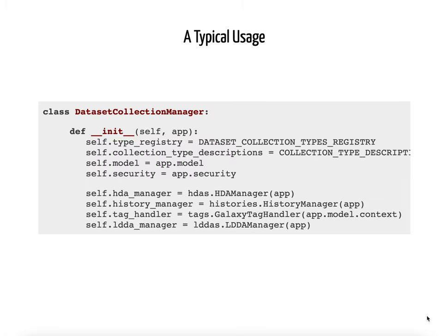Here's a very typical example of a Galaxy backend component that consumes the app. Unlike a lot of other components, I was trying to decouple it from app, so I pulled off just what I needed from app in the constructor, and the dataset collection manager doesn't have a reference to app. But it does still use app to construct all of its dependencies in various ways, and it does use the model and the security components — the subcomponents of the app object.